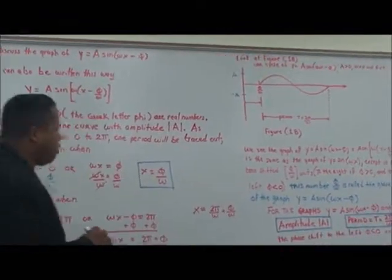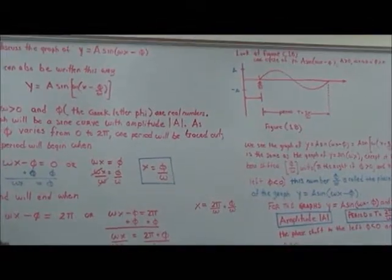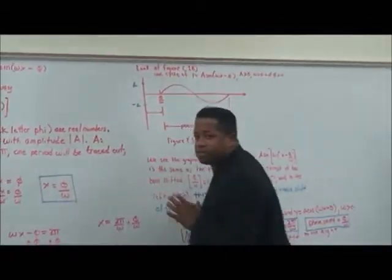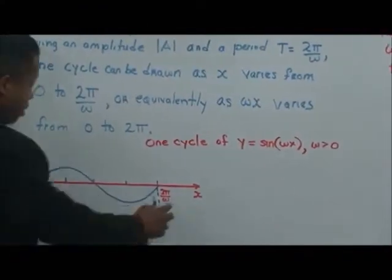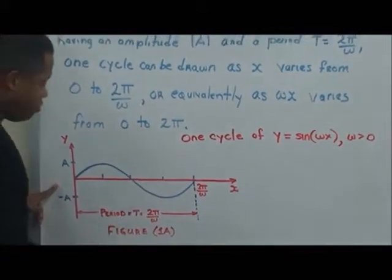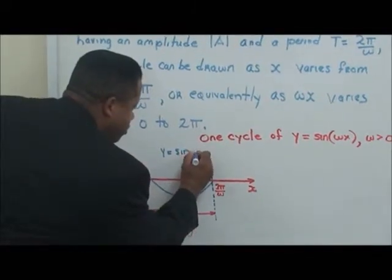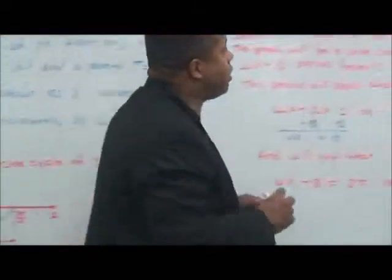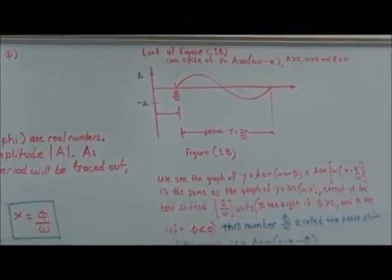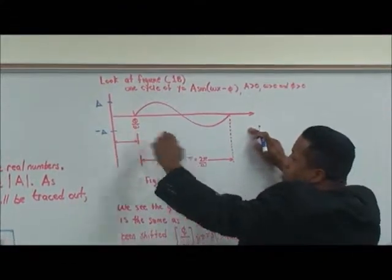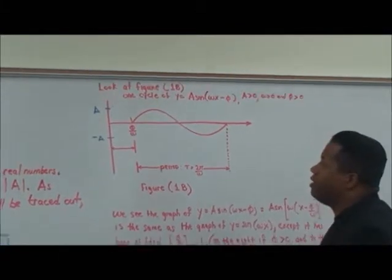With this, the actual period will end at that point. We see the phase shift: the regular sine function y equals A·sine(ωx) shifts from here to this new starting point. That amount shifted is your phase shift, which is φ divided by ω.